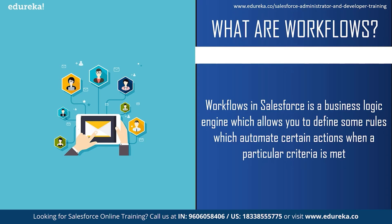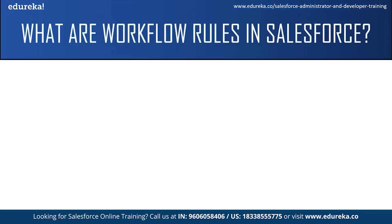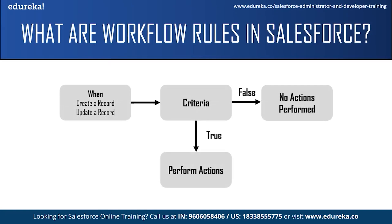Watch the demo where I will show you how to set a workflow rule for automatically sending an email. Each workflow rule consists of two main things: the criteria and the actions. You can set criteria when a record has been created or when it has been updated, and these records are based on a single object.